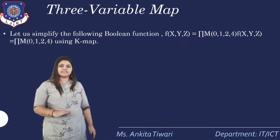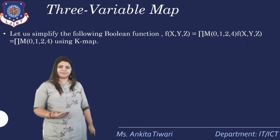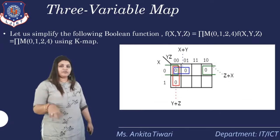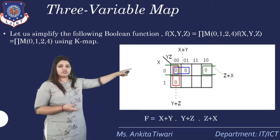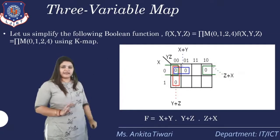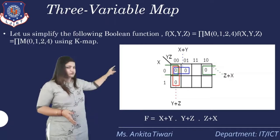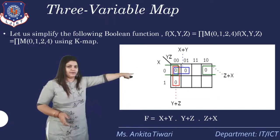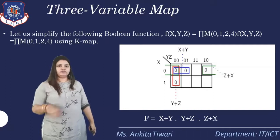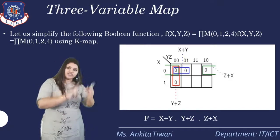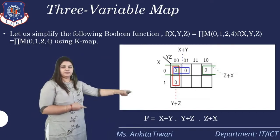Now we will see the 3-variable K-Map using maxterms. Here pi is represented as maxterm — capital M — and is always represented by 0. We have to make pairs of zeros and the answer will be a Product of Sum, not Sum of Product. Here there are four zeros. Maximum 4-pair is possible, but they cannot all be combined directly. So we make two 2-pairs. No zero should be left out — all zeros must be included in pairs. We get the answer as: (x + y) · (x + y + z) · (z + x).